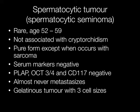Spermatocytic tumours are not associated with cryptorchidism, and they usually occur in the pure form except when there is a sarcomatous component. In addition, the serum markers are negative, and immunostaining for PLAP, OCT34 and CD117 are all negative. Spermatocytic tumours almost never metastasise.